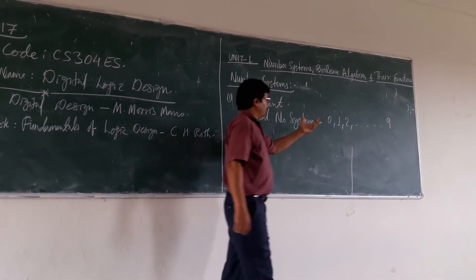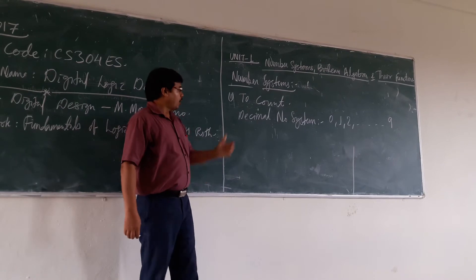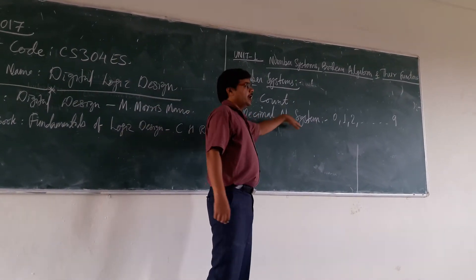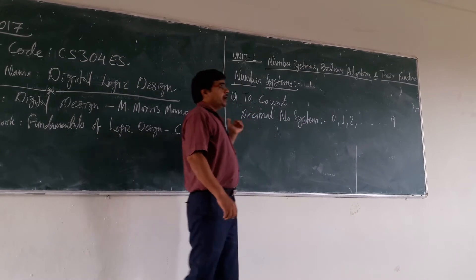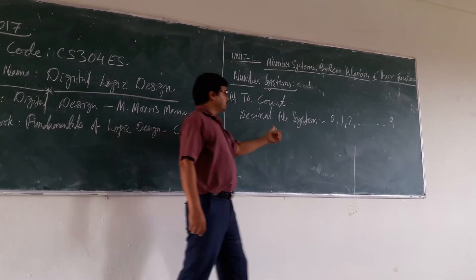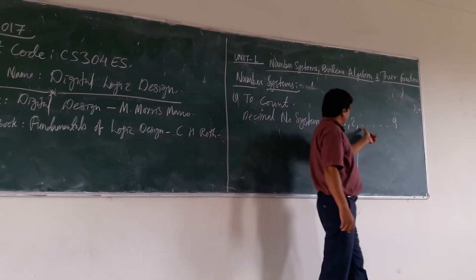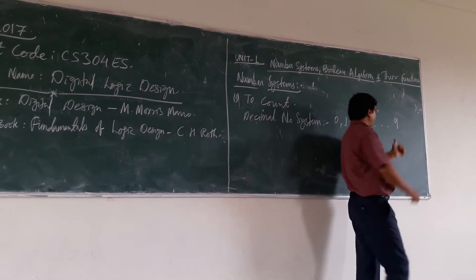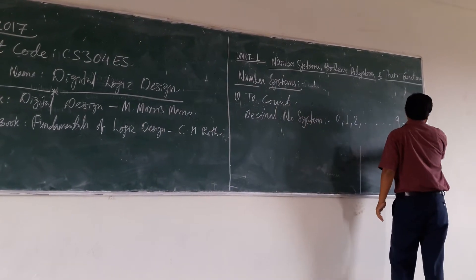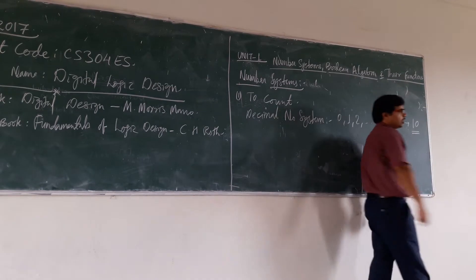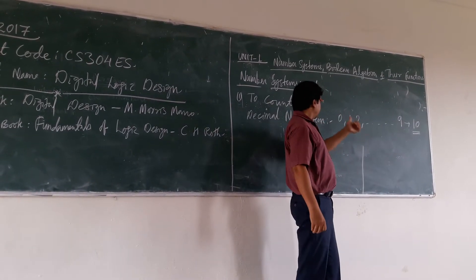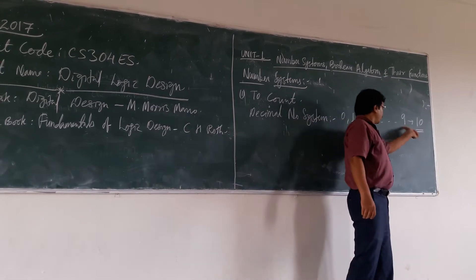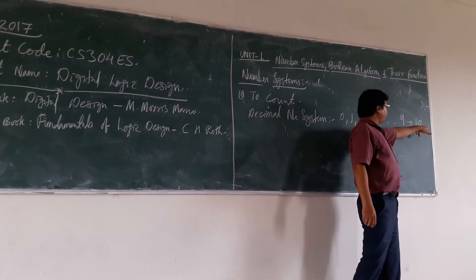This is the way of counting — it is your decimal number system. In the decimal number system, if you are seeing how many elements you are having, here you will have 10 elements. It is starting from 0, so totally you will have 10.